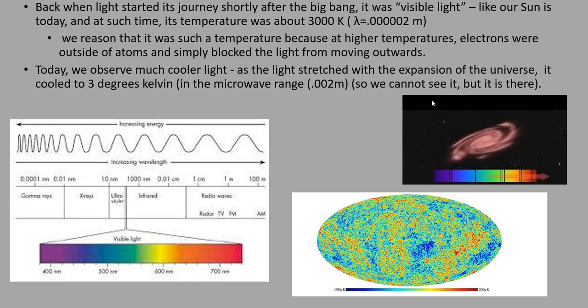Back when light started its journey shortly after the Big Bang, it was visible light like our sun is today, and at such time its temperature was about 3,000 Kelvin, which corresponds to a wavelength of 0.002 meters. We reason that it was this temperature of 3,000 degrees because at higher temperatures, electrons would have been outside of the atoms and would simply block the light from moving outwards. So the universe became transparent to light at the temperature of about 3,000 degrees Kelvin.